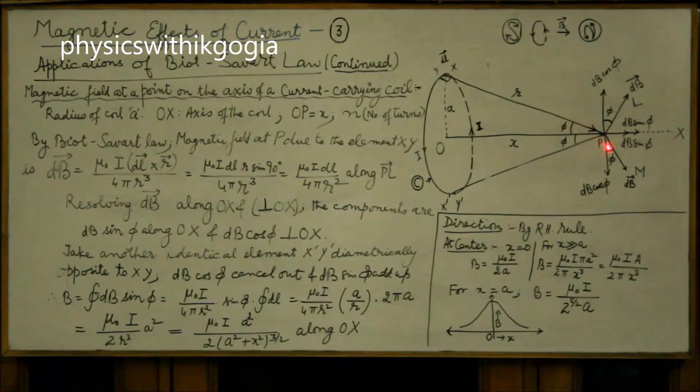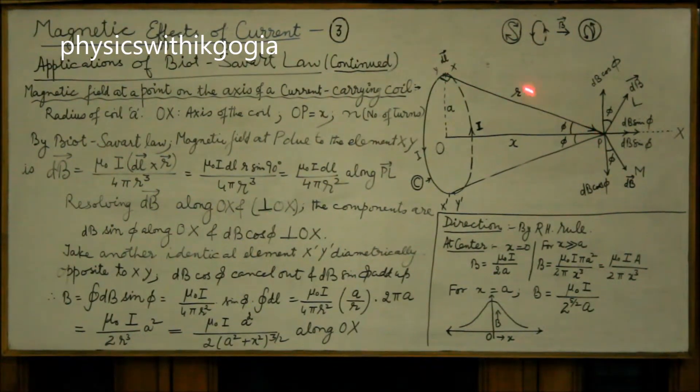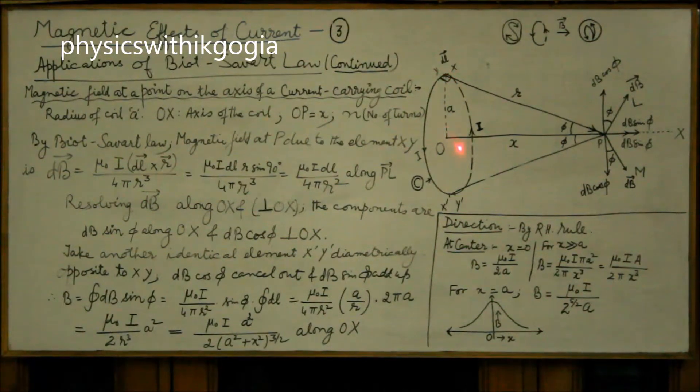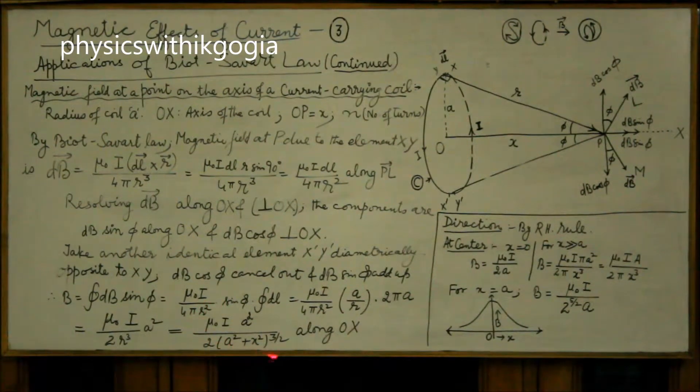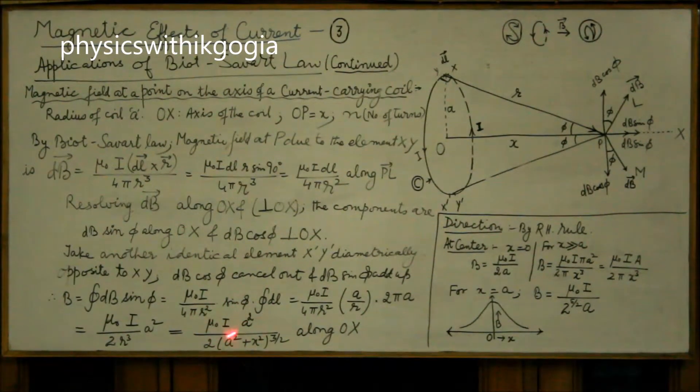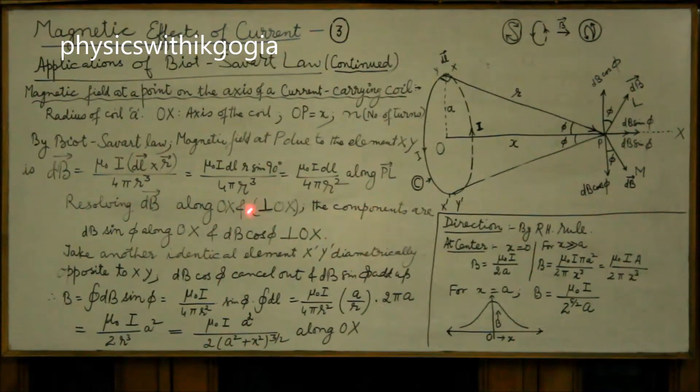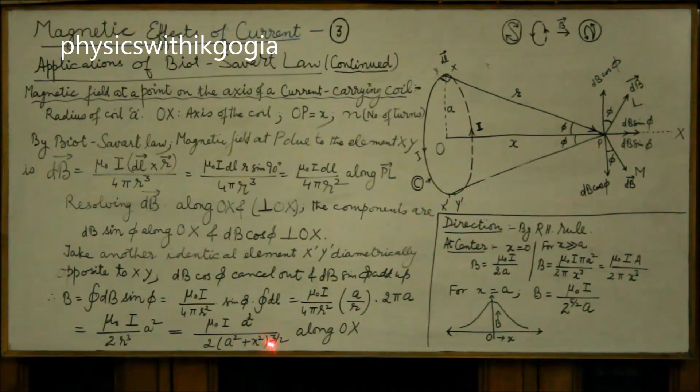R you can get from Pythagoras theorem as √(a² + x²). So that gives you this as the final expression μ₀ i a² over 2(a² + x²)^(3/2) and it's along the axis of the coil OX.